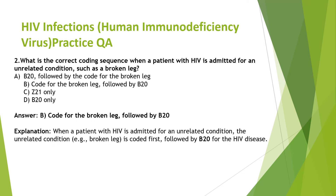Second question: what is the correct coding sequence when a patient with HIV is admitted for an unrelated condition? The guideline says whenever an HIV patient is admitted for an unrelated condition, we always give priority to the unrelated condition. The patient is admitted for a broken leg, so we code broken leg first, then B20 second.